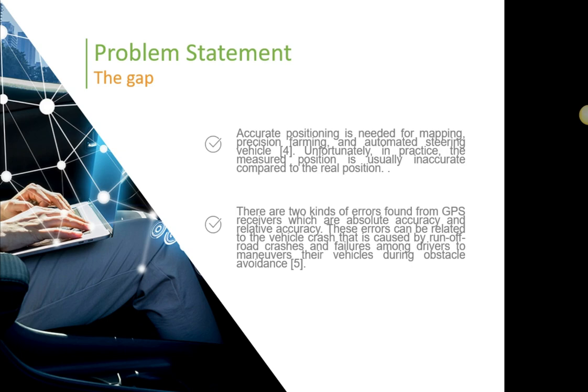And then secondly, there are two kinds of errors found in the GPS signal, which are absolute accuracy and relative accuracy. So, these errors can be related to the vehicle crash that is caused by run-off road crashes and failures among drivers to maneuver their vehicles during obstacle avoidance.